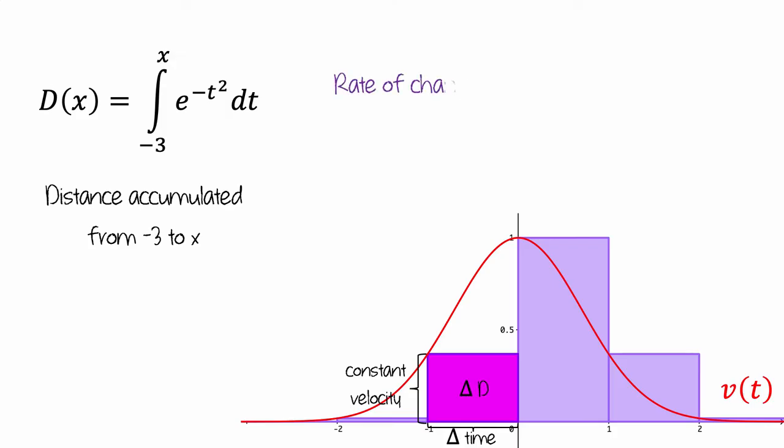Let's think about the rate of change of distance with respect to time, just for the interval between negative 1 and 0 seconds. Since we're assuming the velocity is constant, then the rate of change of distance is the ratio of the amount of change in distance and the amount of change in time.